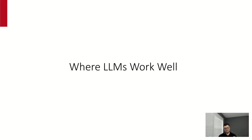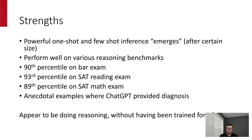Where do large language models work well? This started with a paper on emerging properties of large language models, which was somewhat controversial. The observation was that once models passed about 100 billion parameters, they start performing really well on a number of tasks including arithmetic, and various different benchmarks where suddenly they have really good performance.